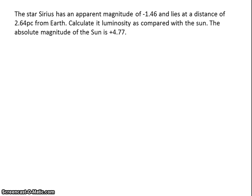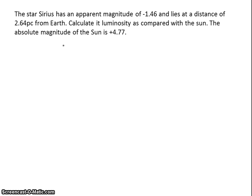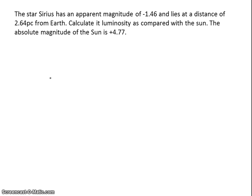In this next problem, we're being asked to compare the luminosity of two stars. The star Sirius has an apparent magnitude of negative 1.46 and lies at a distance of 2.64 parsecs from Earth. We're comparing its luminosity to our Sun, which has an absolute magnitude of 4.77. Remember that when we compare absolute magnitude values we use luminosity, and when we compare apparent magnitude values we use brightness.